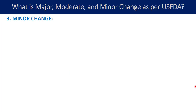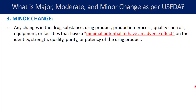Let us now talk about the last type of change — the minor change. The definition is: any change in the drug substance, drug product, production process, quality controls, equipment, or facilities that has a minimal potential to have an adverse effect on the identity, strength, quality, purity, or potency of the drug product. In summary: major change involves substantial potential; moderate change involves moderate potential; and minor change involves minimal potential. This is the last kind of change proposed by the US FDA.